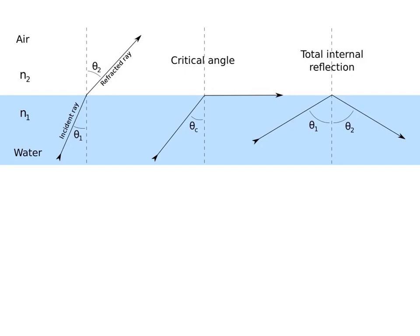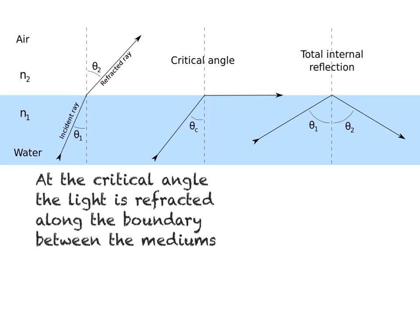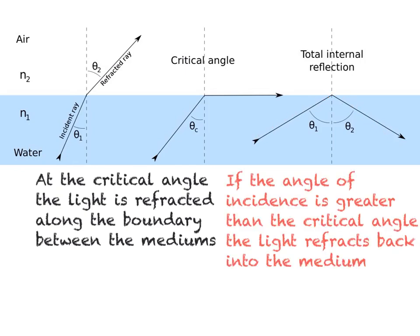As we looked at in the last video, we saw that as the incident ray increased, the amount of refraction changed until we reached the critical angle. At the critical angle, the angle of incidence causes the angle of refraction to run alongside the boundary between the mediums. Beyond the critical angle, where the incident ray is now greater than this critical angle, we get total internal reflection. Instead of refraction, we are now getting reflection back into the medium.